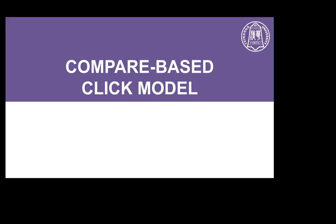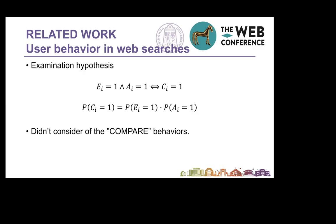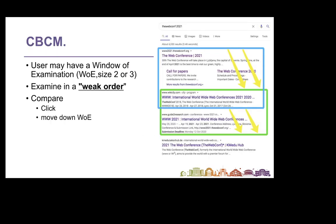Now, we found that the answers to all four research questions are yes, and we will introduce how we designed a click model to model users' comparison behaviors. In traditional user behavior models, we often use the examination hypothesis, which considers that a click is only dependent on two random variables: EI, whether the user examines the result, and AI, whether the result is attractive. But it does not consider comparison behavior. In CBCM, we define an updated examination hypothesis as the weak-order hypothesis.